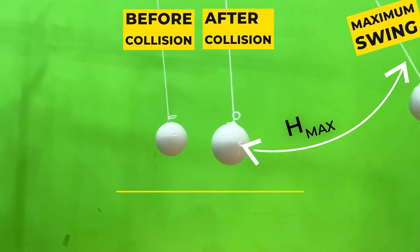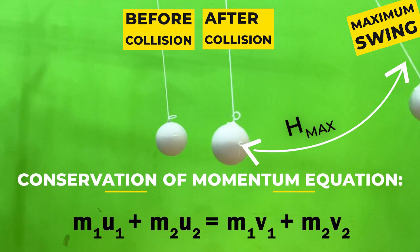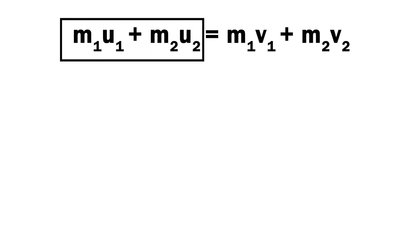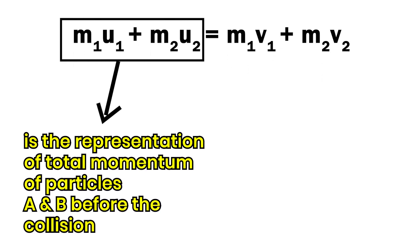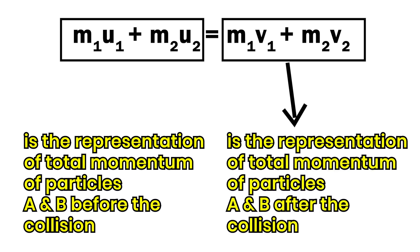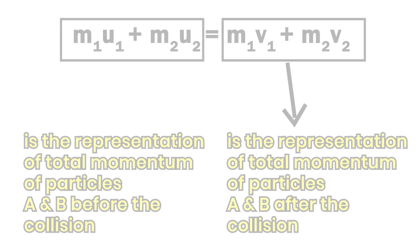Here's the conservation of momentum equation: M1U1 plus M2U2 equals M1V1 plus M2V2. So M1U1 plus M2U2 is the representation of the total momentum of particles A and B before the collision. And M1V1 plus M2V2 is the representation of the total momentum of particles A and B after the collision.